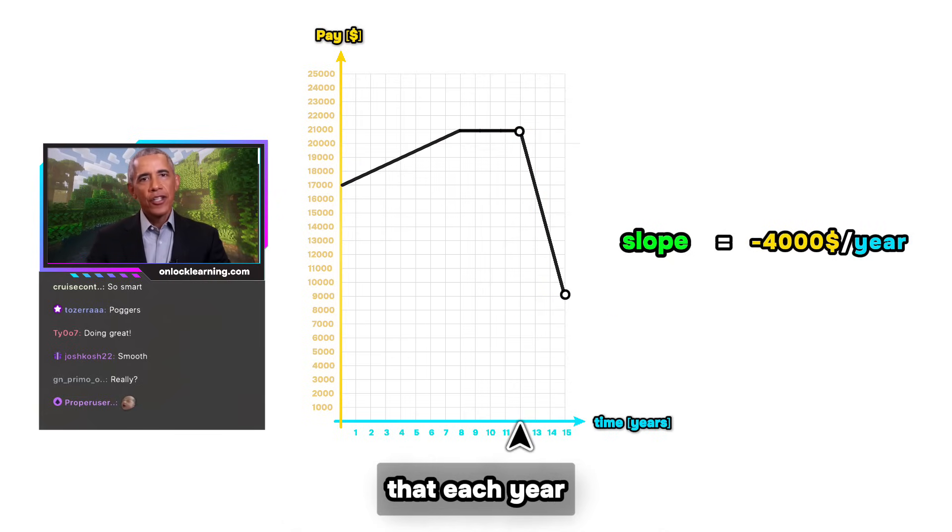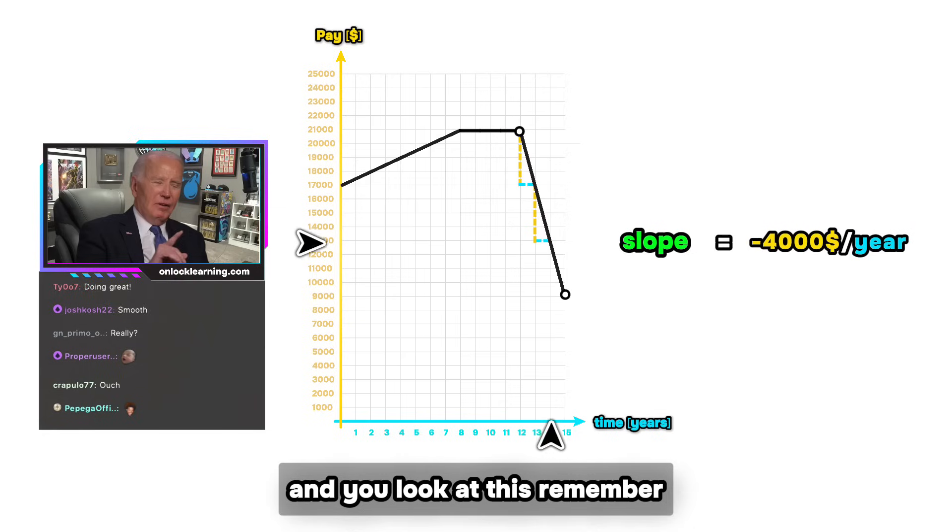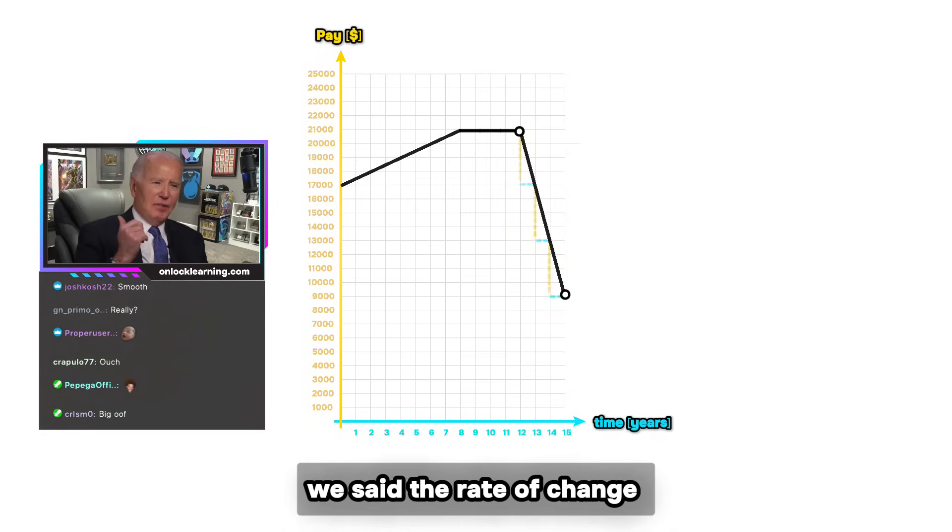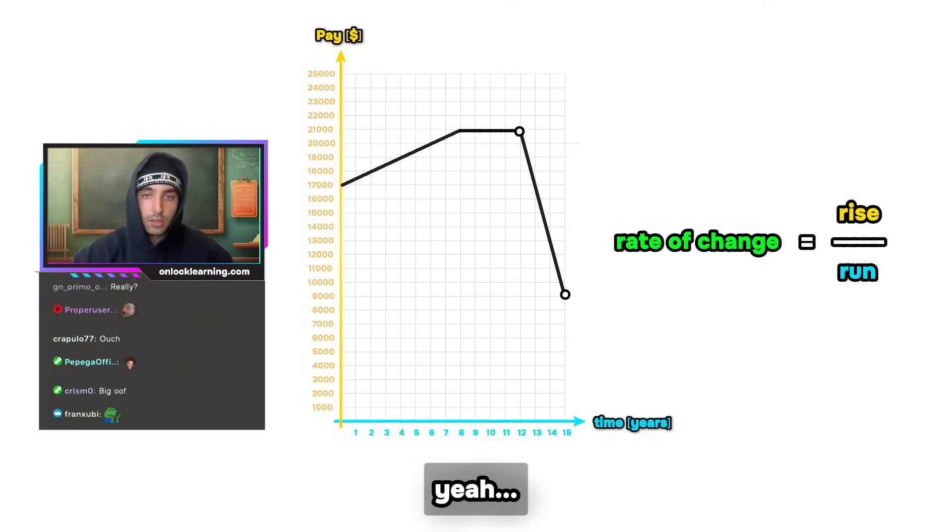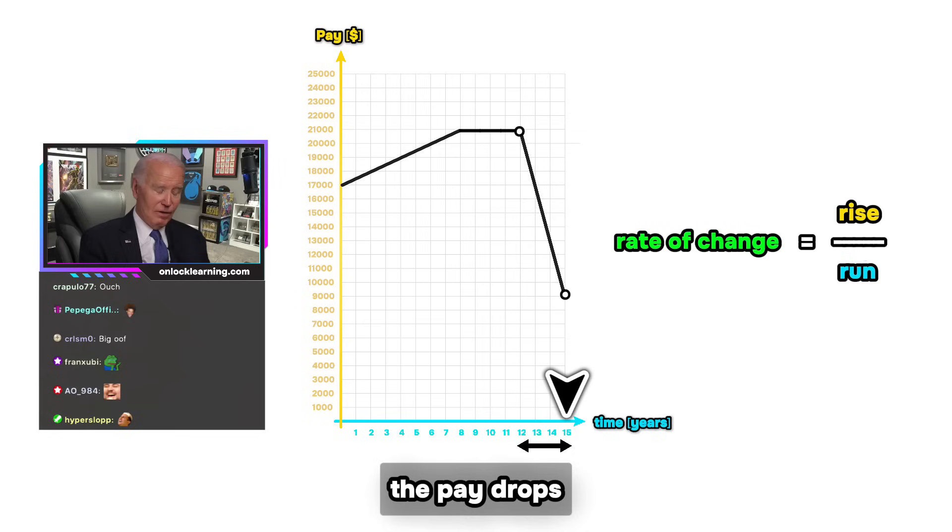Well, it being negative means that each year his pay goes down by four thousand dollars. Unbelievable. And yo, look at this. Remember we said the rate of change is just rise over run? Yeah. Well over this stretch of time, the pay drops, so it technically rises a negative amount. Make sense?